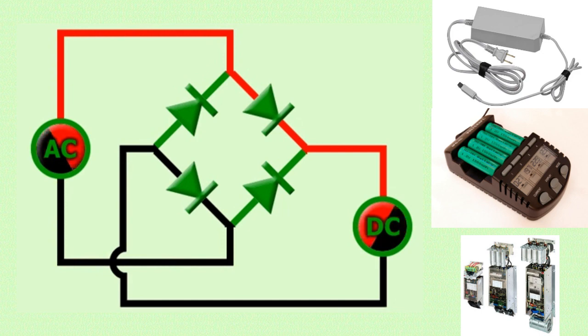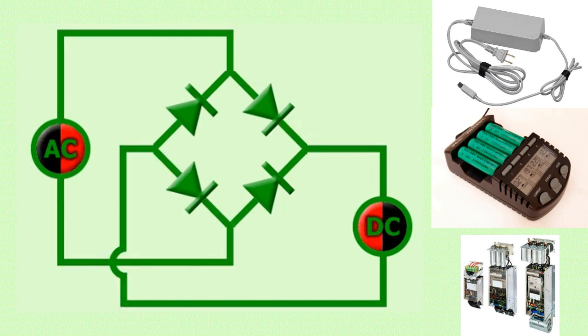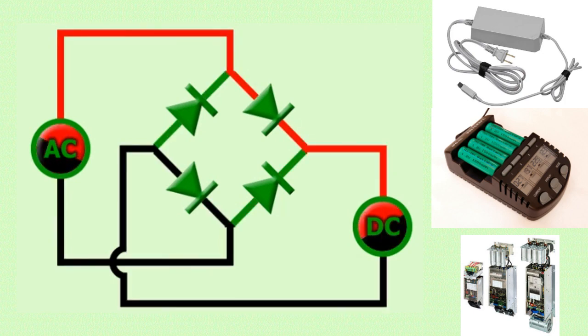This allows the positive half cycle of the AC input to be converted into a positive DC voltage at the output, and the negative half cycle to be converted into a negative DC voltage.